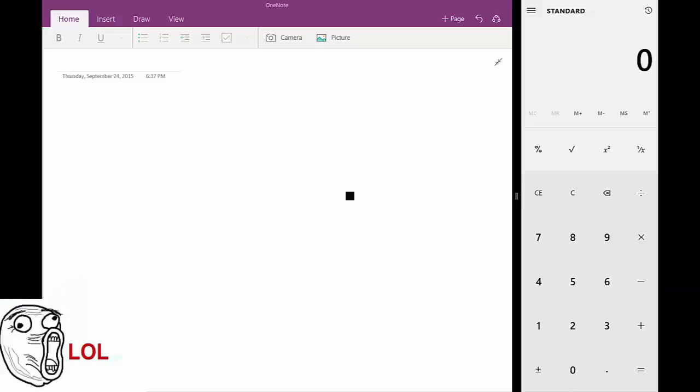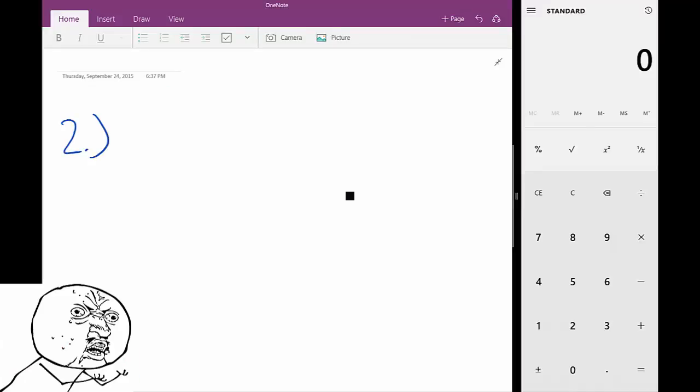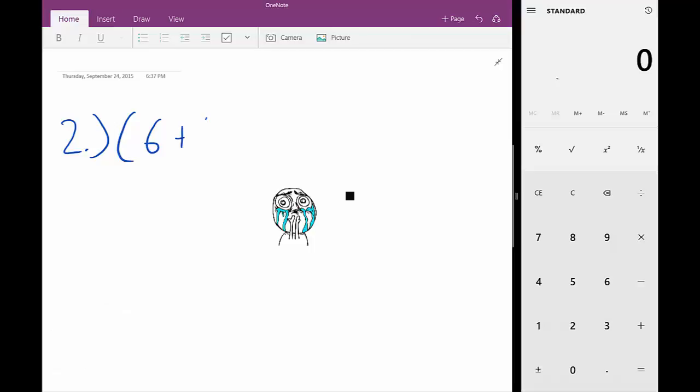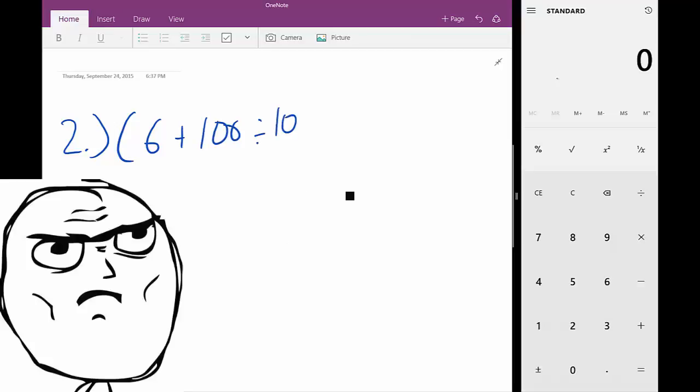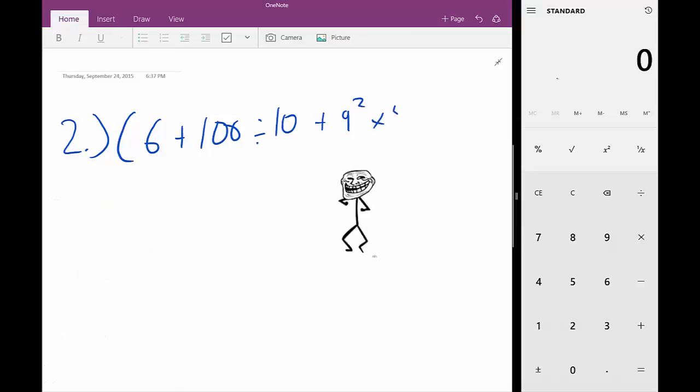Alright, it's a little bit quieter this time. We're going to do problem number two and the problem is 6 plus 100 divided by 10 plus 9 squared times 4, close parenthesis.